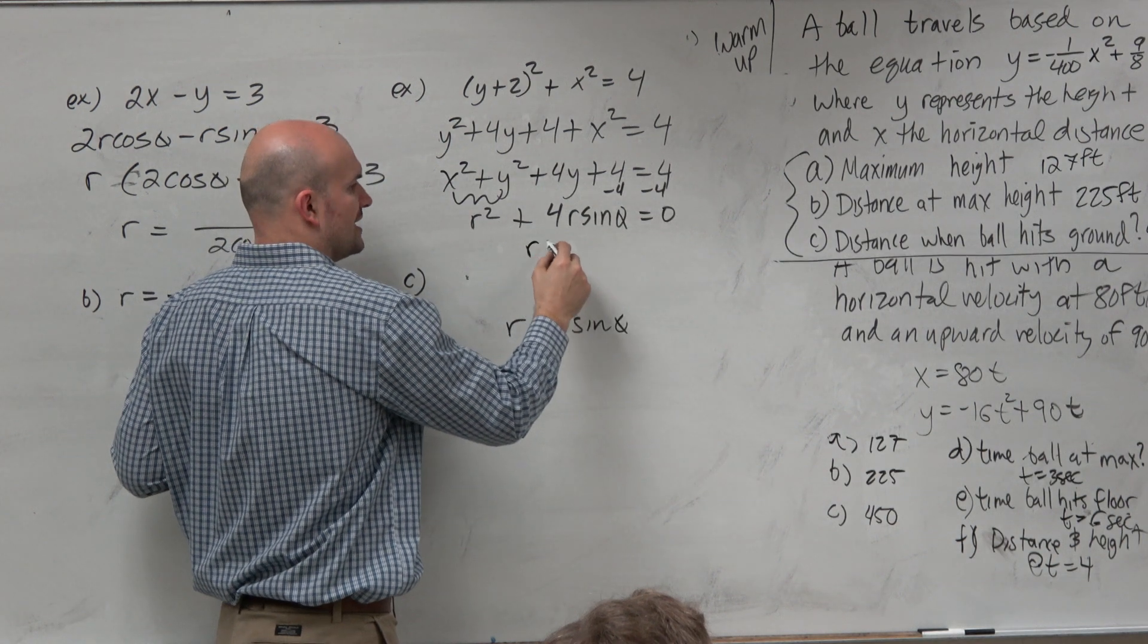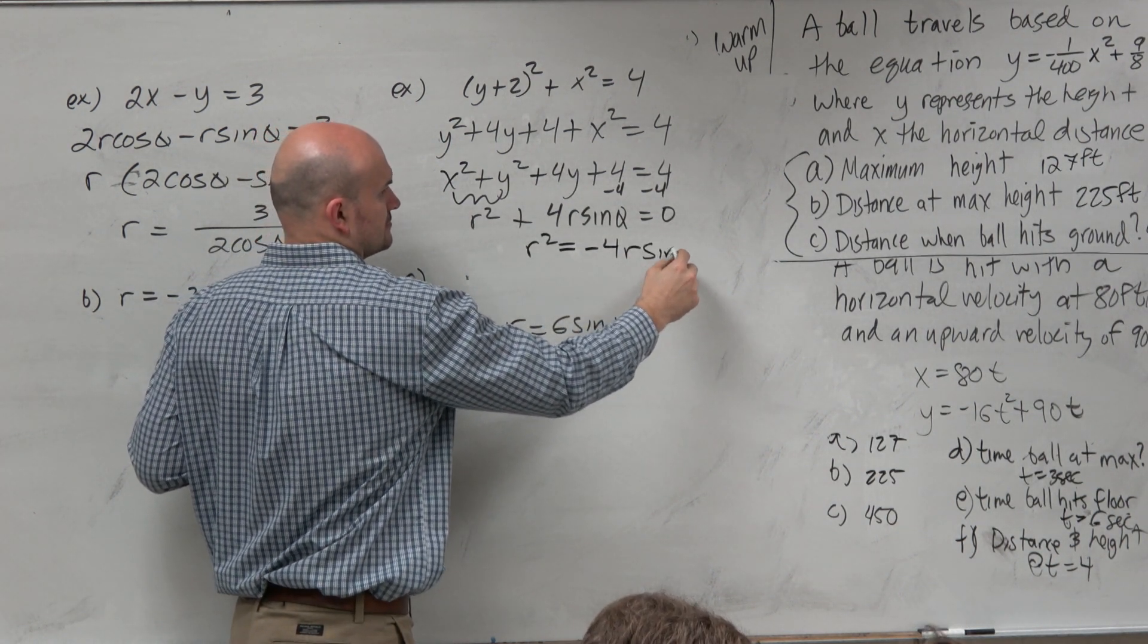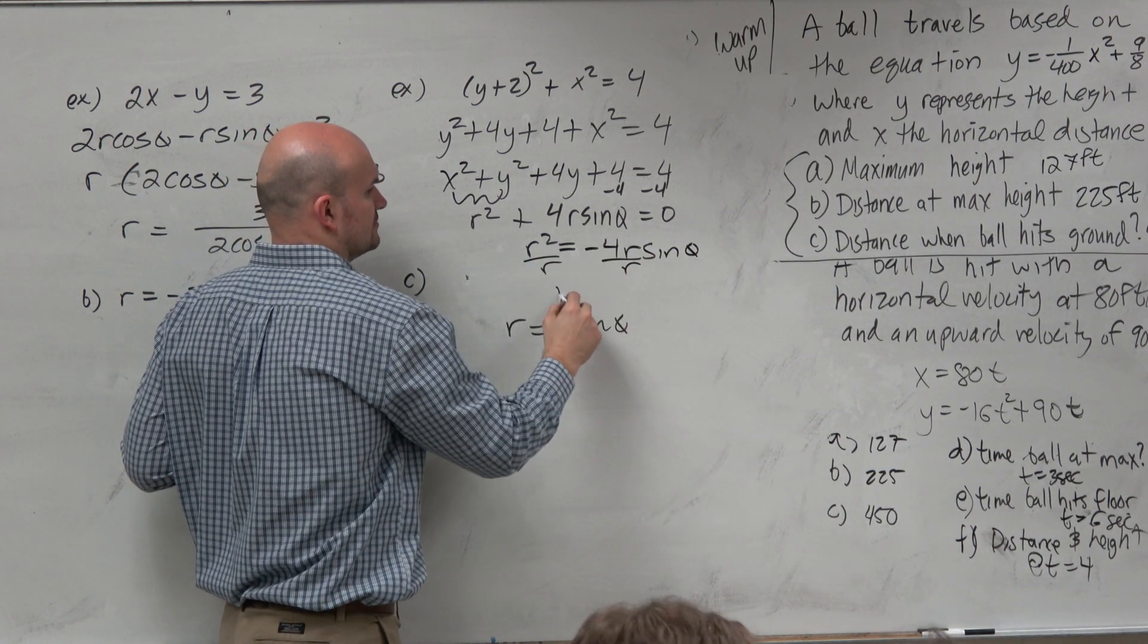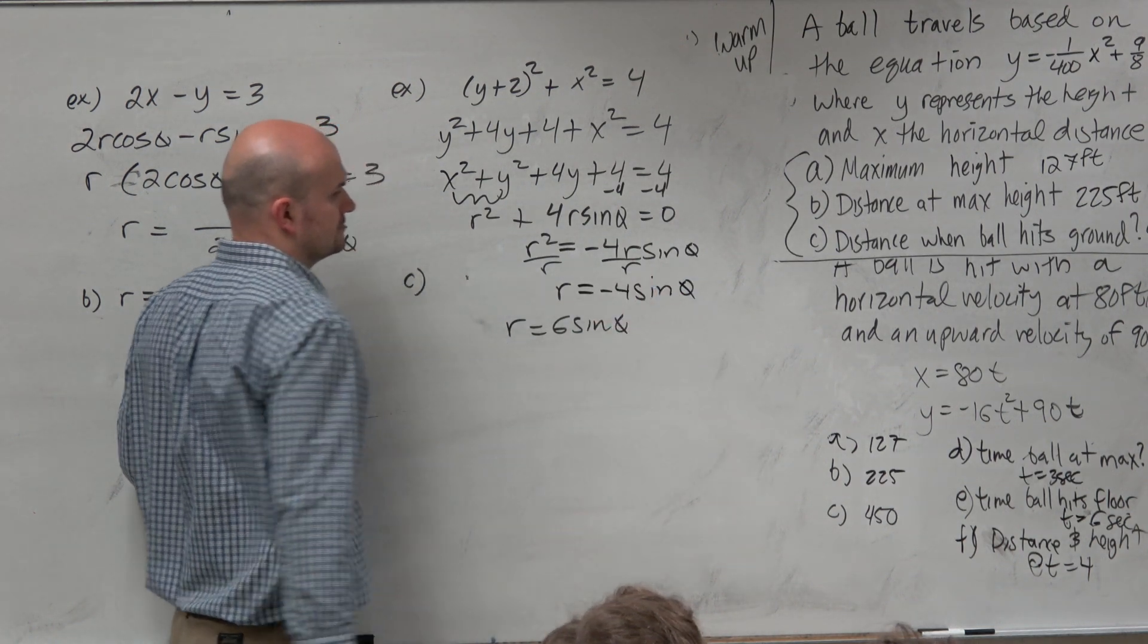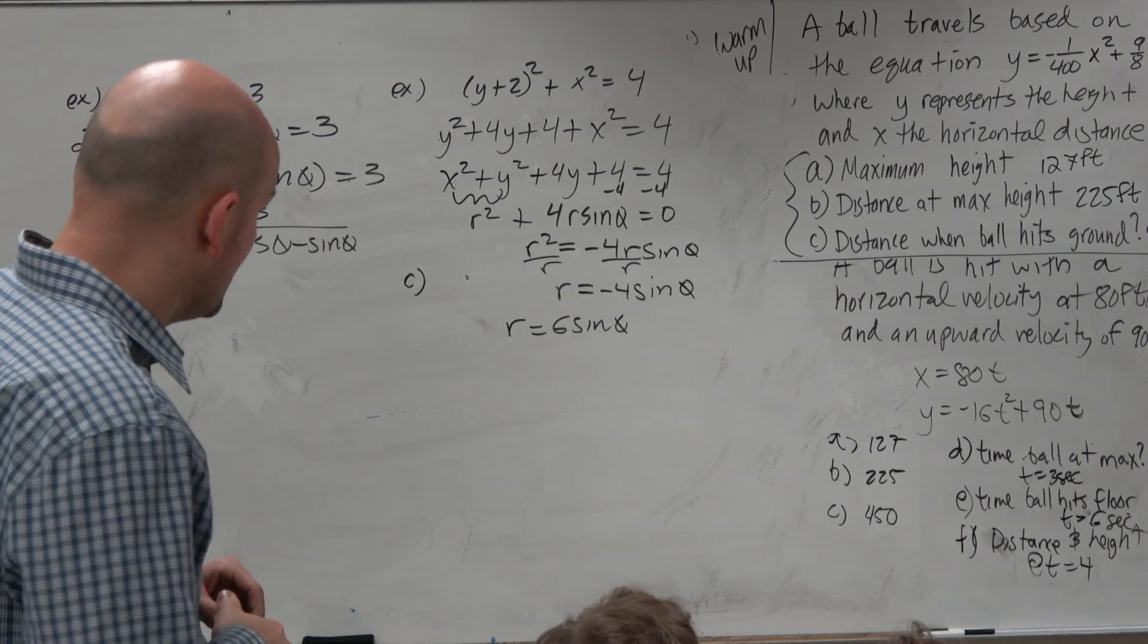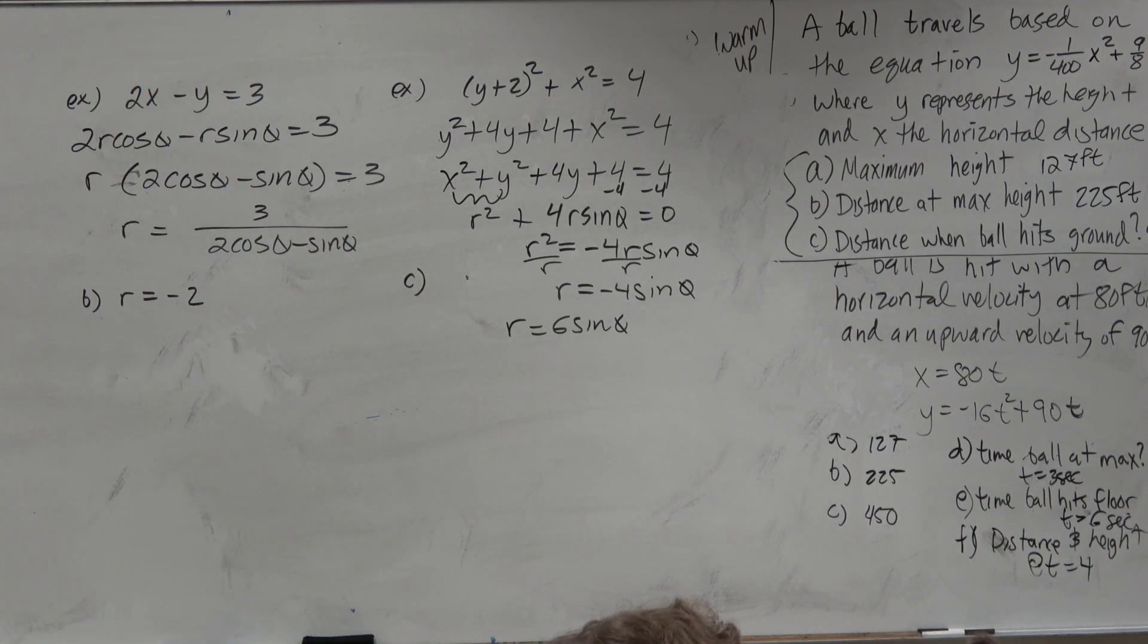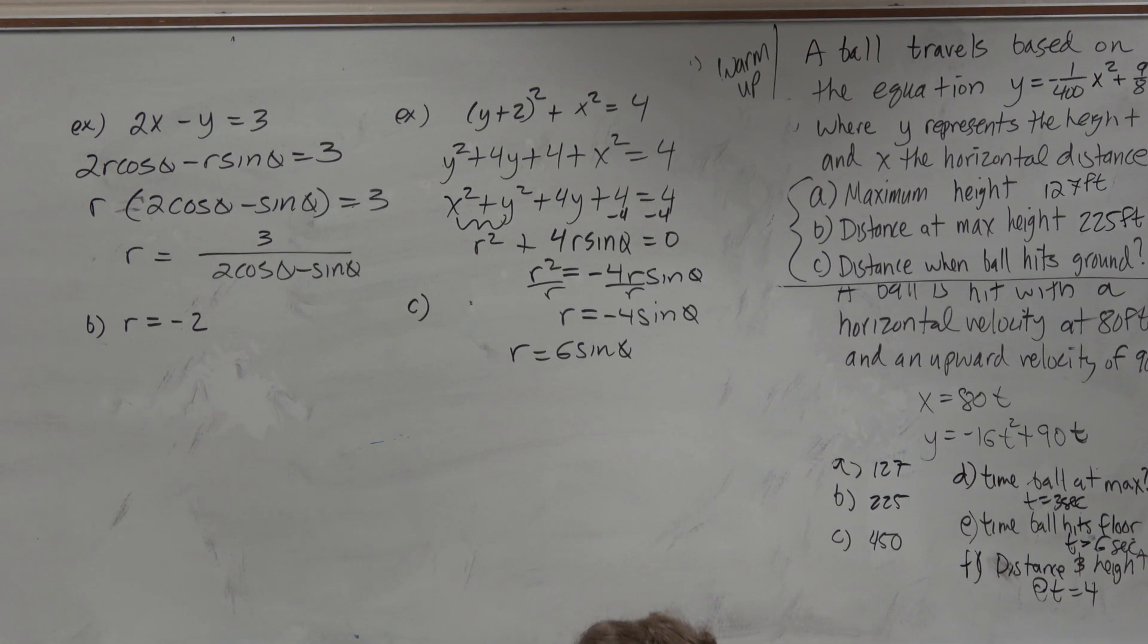To solve for r, though, I could set them equal to each other and then divide by r. Because you can't take the square root of sine. Well, you can, but then you have to leave the sine there. You can't just take the square root of one number.